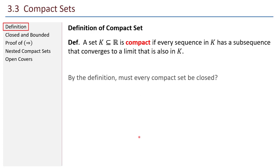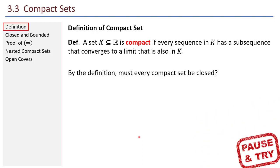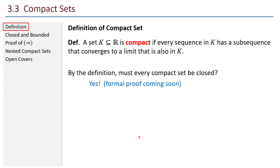A couple of questions. By the definition, must every compact set be closed? The answer is yes, and we'll see a formal proof soon. The idea is that if I have a sequence whose elements are in K, and that sequence converges, then that sequence itself is a subsequence of itself. So it must converge to a limit that's also in K.